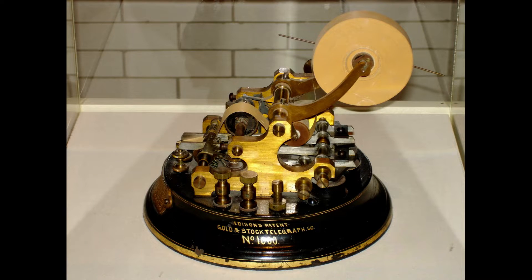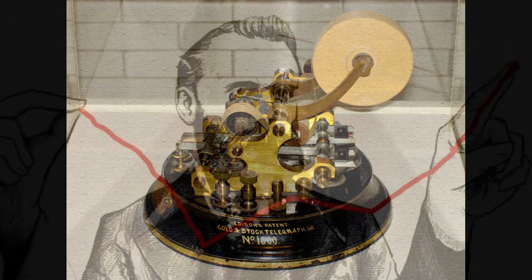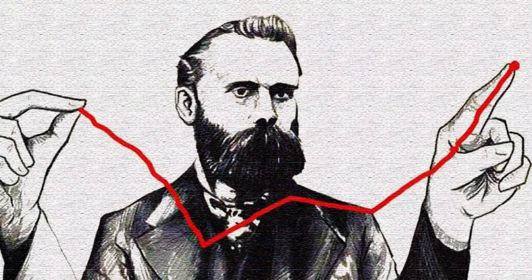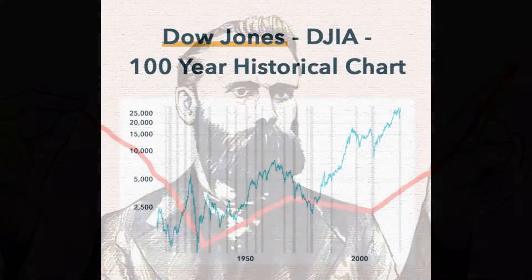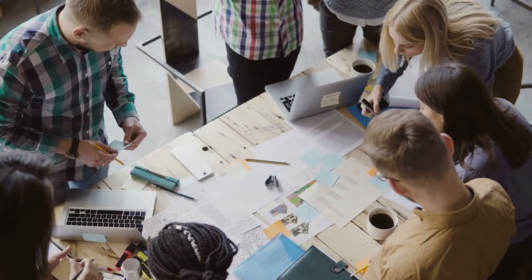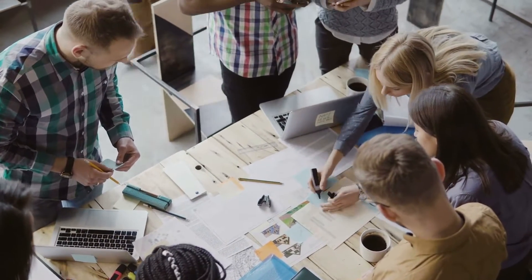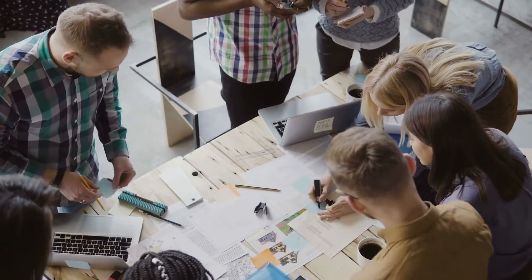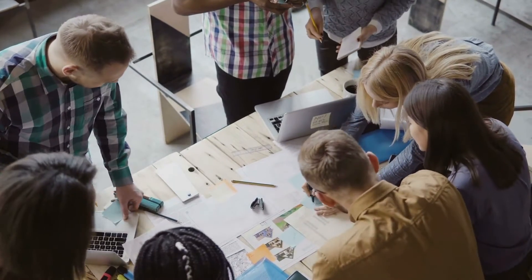One of the first known practitioners of technical analysis was Charles Dow, who in the late 1800s developed the Dow Jones Industrial Average, an index that tracks the performance of 30 large publicly traded companies. Dow also wrote editorials in which he outlined his belief in the importance of studying price movements to predict future market trends.